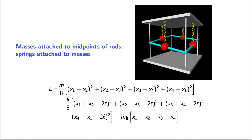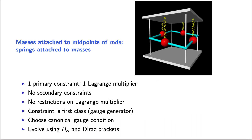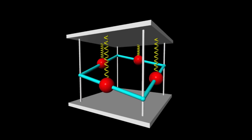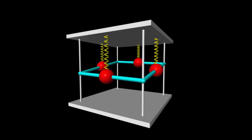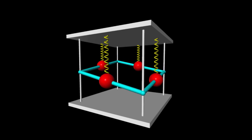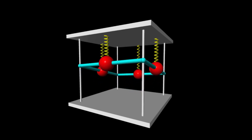What's really interesting is that this system changes its character quite a lot if we simply move the springs from the corners of the rods to the masses. As in the previous case, the Lagrangian is singular and we have one primary constraint and one Lagrange multiplier. But unlike the previous case, there are no secondary constraints and no restrictions on the Lagrange multiplier. The one constraint is first class and generates a gauge transformation — so this is a gauge theory. For the simulation, I've chosen a canonical gauge condition and reduced the system using Dirac brackets. The simulation looks qualitatively similar to the previous case, but the detailed evolution is actually quite different.